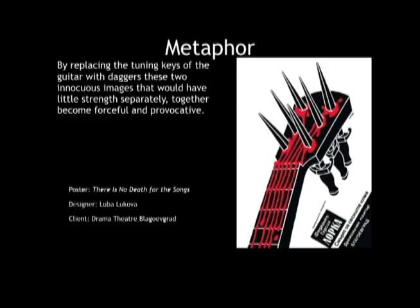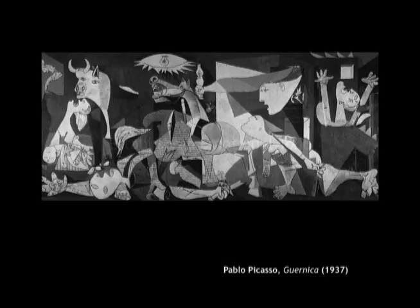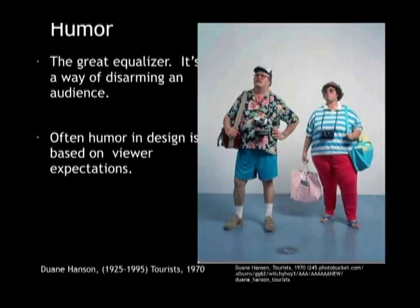Metaphor can happen in visual imagery by putting images together that would be innocuous on their own but have a strength or force when used together, as in this poster. In Picasso's Guernica, the images are fairly literal — it's more the way they're painted that establishes an emotional tone. This painting of the assault on the town of Guernica during the Spanish Civil War remains, for me, one of the most powerful examples of establishing an emotional tone of agony and horror at the depredations of war.